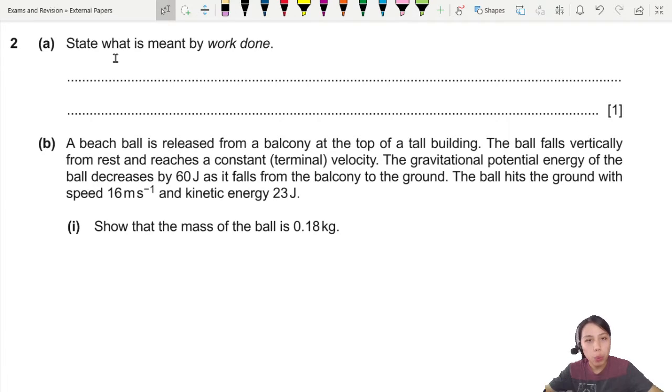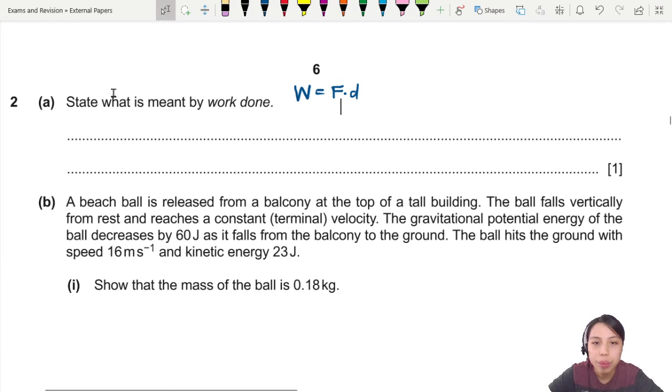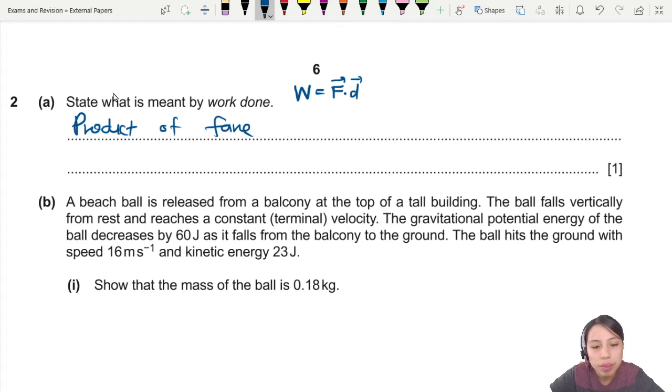What is meant by work done? Work done, generally, if you don't remember how to explain, you can use the equation to guide you: force times distance, or the proper one is force dot distance, because both of these are really vectors. You want to say in a more English sentence, it's a product of force and displacement of an object.